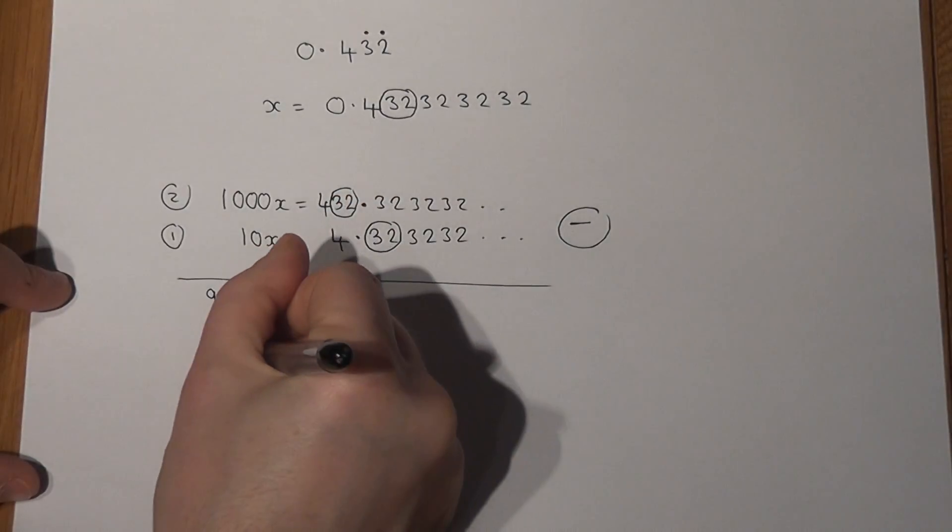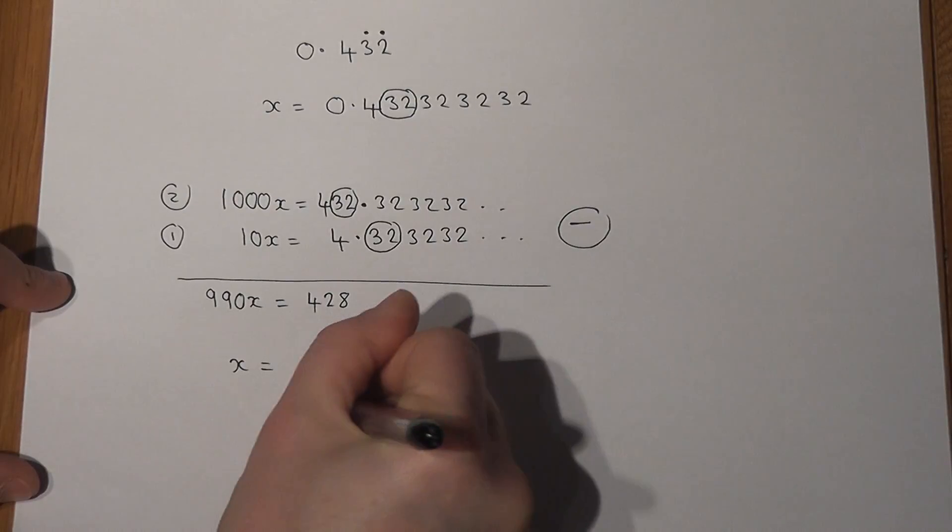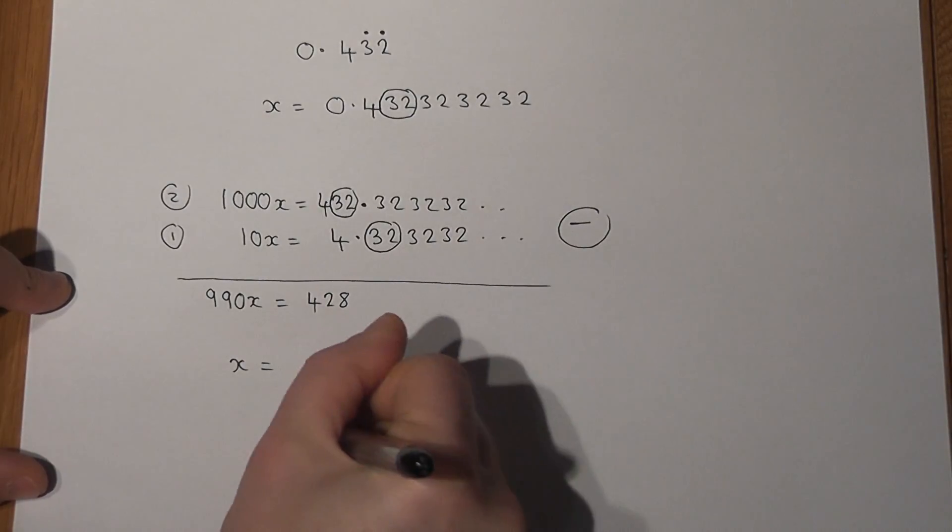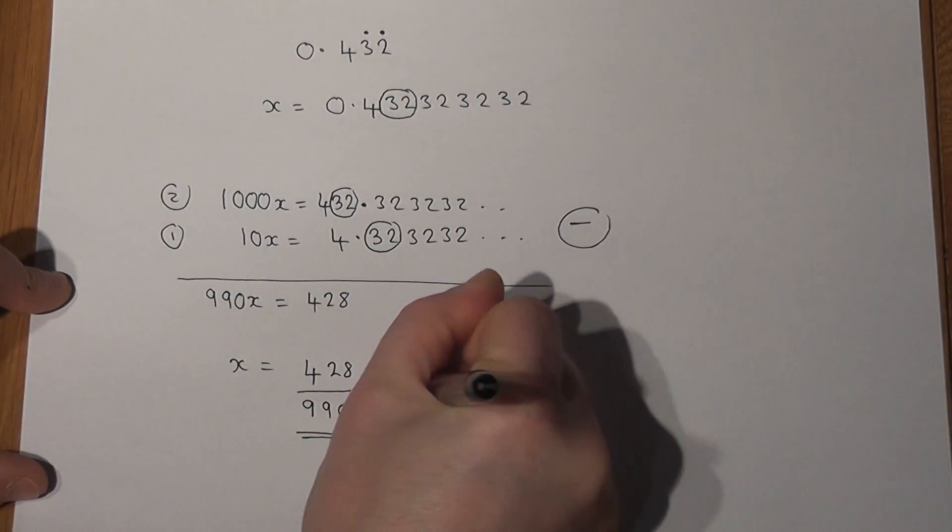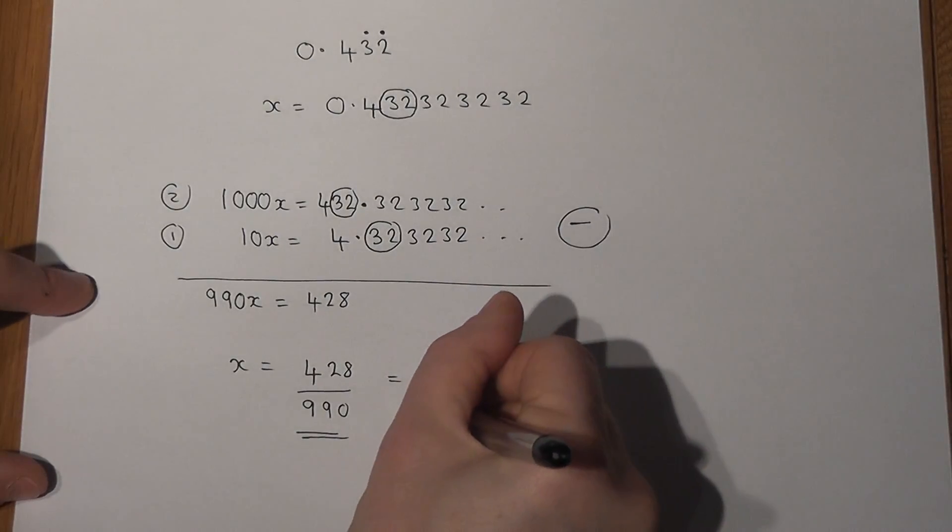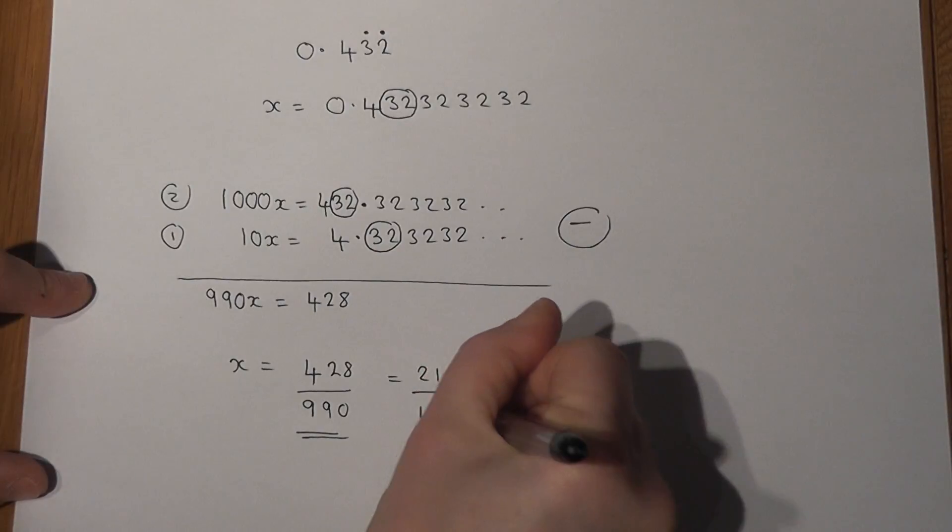So my number X just equals 428 over 990, which is 214 over 495.